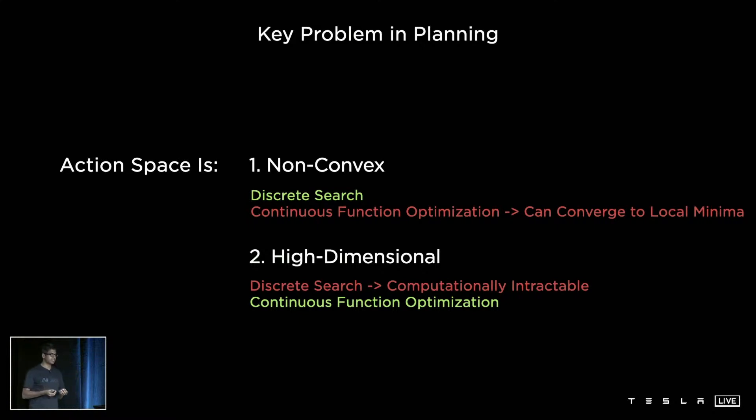Discrete search methods are really great at solving non-convex problems because they are discrete, they don't get stuck in local minima, whereas continuous function optimization can easily get stuck in local minima and produce poor solutions that are not great.